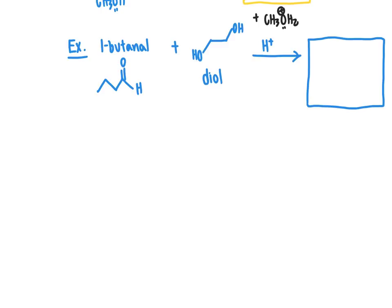The first step of this mechanism is protonation — we're going to protonate the carbonyl group of butanal. You might ask why we protonate butanal's carbonyl rather than one of the hydroxy groups on the diol. If we protonated the diol's hydroxy group, the reaction would not be productive — there'd be nowhere to go from there. In the real world, some protonation of the alcohol does occur, but it is not productive. The productive protonation is of the butanal carbonyl, so that's what we show in the mechanism to demonstrate how we get to an observable product.